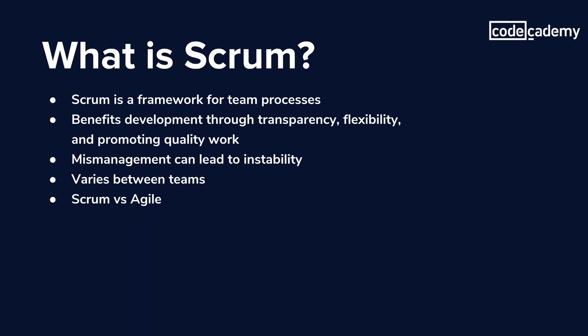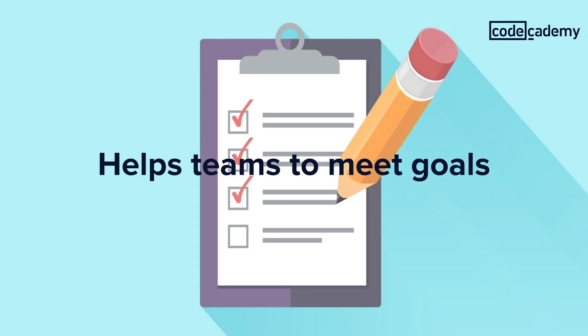Scrum is a framework that teams use to operate and organize the work that they'll be doing. It's the framework that teams follow to make sure that their work is best suited for achieving their goals.